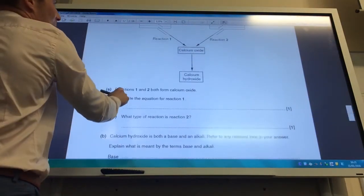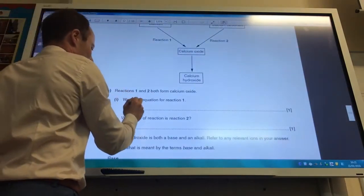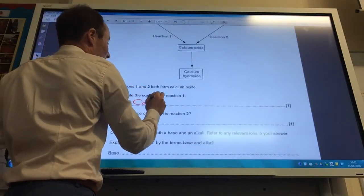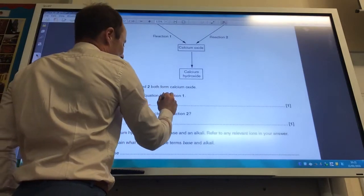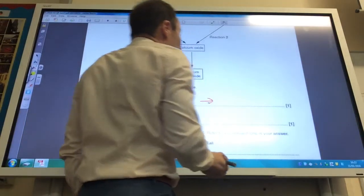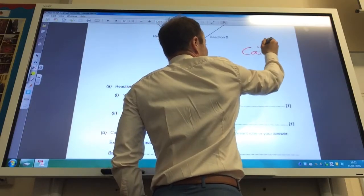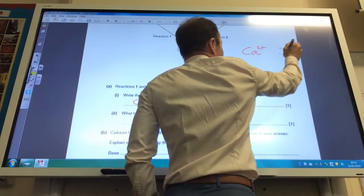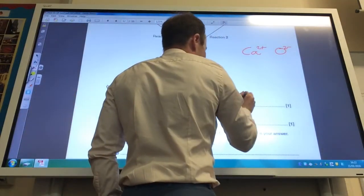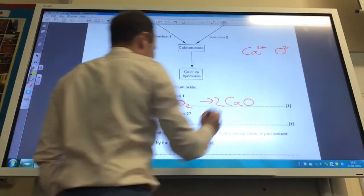Right, equation for reaction 1. So reaction 1, I'm starting off with calcium and I'm making calcium oxide. So adding oxygen, oxygen of course is O2 to give me calcium oxide. What's the formula of calcium oxide going to be? Well calcium, we've said it's in group 2, so that's calcium 2 plus. Oxygen's in group 6, so O2 minus. So obviously 1 to 1 would give me calcium oxide. To get that to balance, I need two of those and two of those.